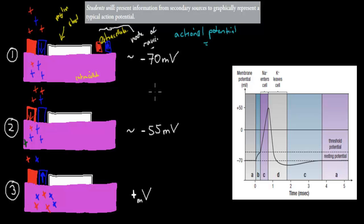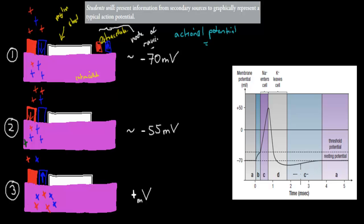What we want to talk about is this graph and what it actually means. You need to be able to gather information from secondary sources to graphically represent a type of action potential. This is how most typical action potentials look. You've got it resting, then there's a jump, then a bigger jump, then a bigger drop, and then it's back to normal. Basically these five steps are what we want to talk about in this video, along with the sodium-potassium pump and how everything gets back to normal.